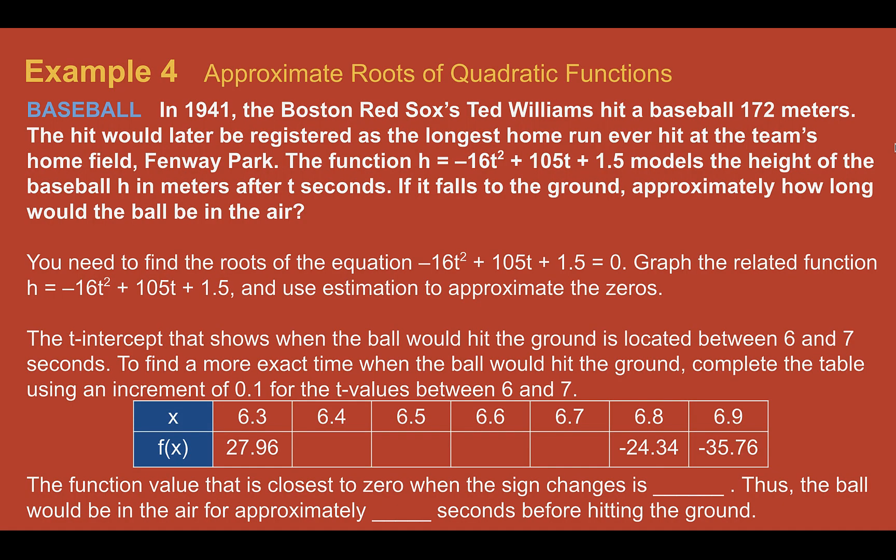Example four, approximate roots of quadratic functions. Our real context here is baseball. In 1941, the Boston Red Sox's Ted Williams hit a baseball 172 meters. The hit would later be registered as the longest home run ever hit at the team's home field, Fenway Park. The function h equals negative 16t squared plus 105t plus 1.5 models the height of the baseball, h, in meters after t seconds. If it falls to the ground, approximately how long would the baseball be in the air?